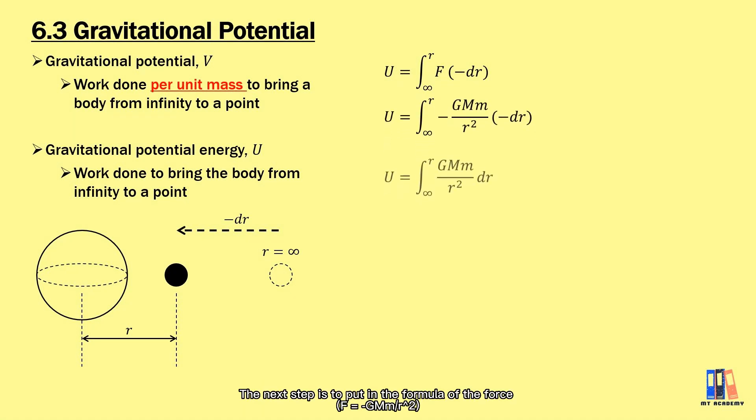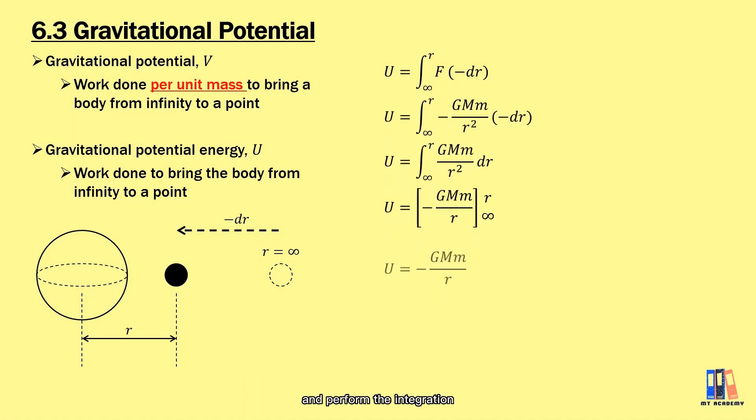Something to note here is that the displacement is in the direction of decreasing r, so it has a negative sign, negative er. The next step is to put in the formula of the force and perform the integration. You get the formula of gravitational potential energy is -GMm/r. As for gravitational potential V, it is the energy per unit mass equal to -GM/r.